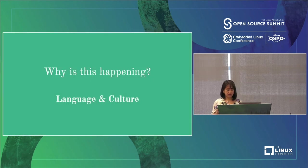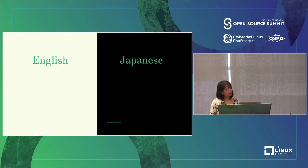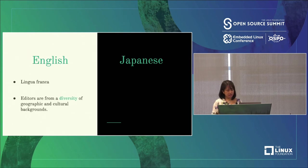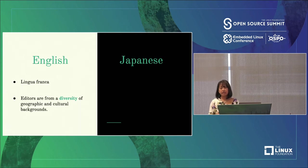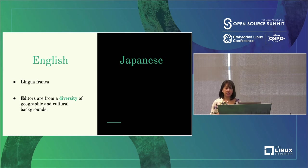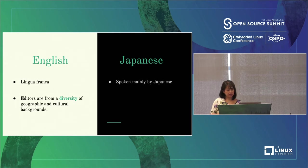Why is this happening? There are two main reasons: language and culture. English is a lingua franca, recognized as an official language in 67 countries and spoken by 1.5 billion people, so it's no surprise that English Wikipedia is the largest, with about 120,000 editors coming from a diversity of geographic and cultural backgrounds. In contrast, Japanese is spoken mainly by Japanese people, meaning those who edit, administer, and read are mostly Japanese — so there isn't as much diversity on the Japanese Wikipedia.